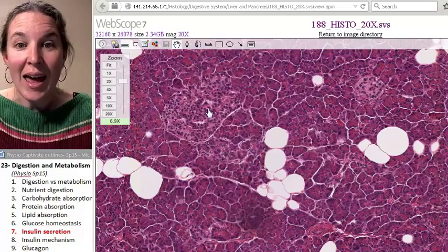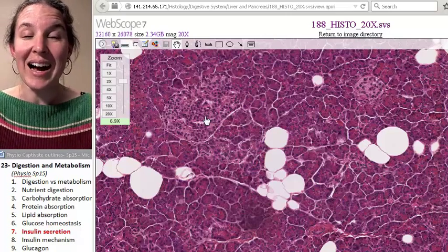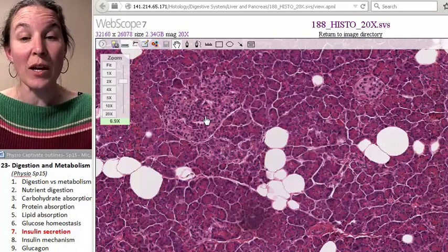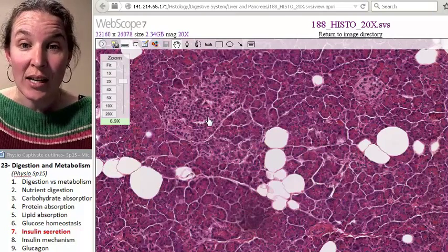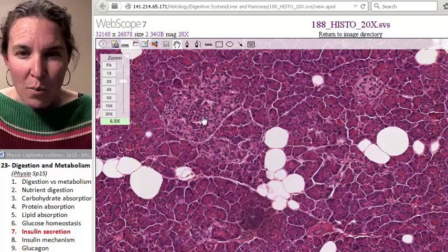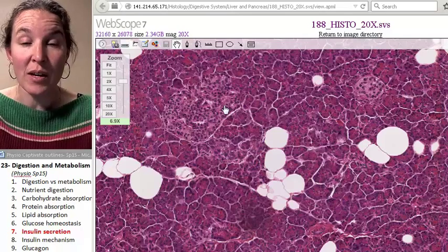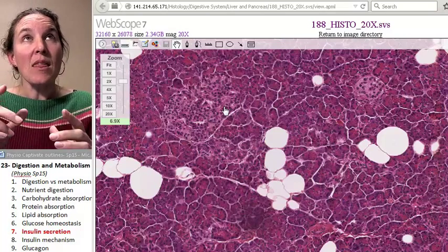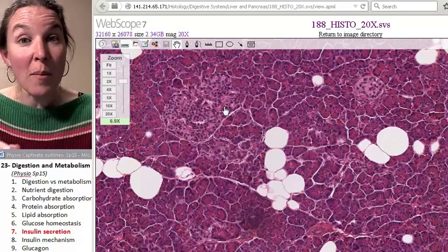This and this is the 1%. The 1% are the islets of Langerhans or the pancreatic islets. These guys are endocrine. You'll notice the cells look different, but there's also a blood supply here. There are blood vessels running through this. And this is where we're going to, number one, get the message from the blood,